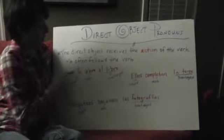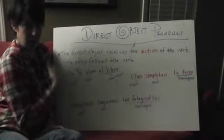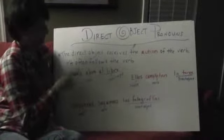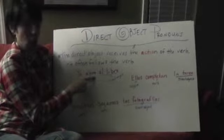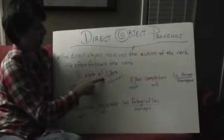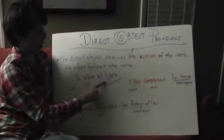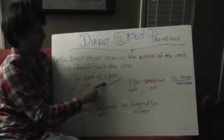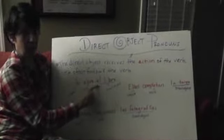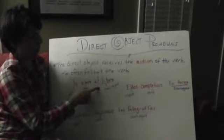So for example: yo abro el libro. Yo is my subject — I'm the one that does the action. My verb is abro, I open. And then el libro is my direct object — I open the book. Again, it's following the verb and it's receiving the action. What do I open? I open the book.